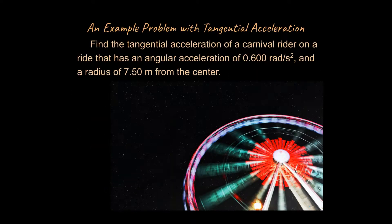All right, let's go ahead and apply this in a problem, in a very simple problem. And it says, find the tangential acceleration of a carnival rider on a ride that has an angular acceleration of 0.6 radians per second squared and a radius of 7.5 meters from the center. All right, fair enough.